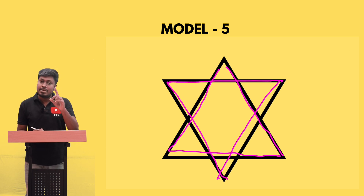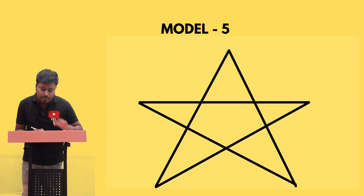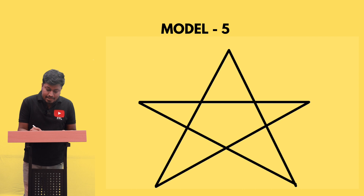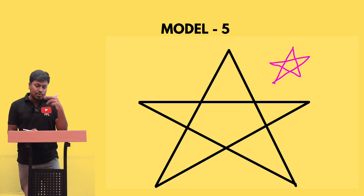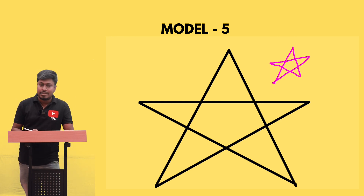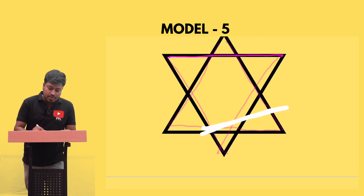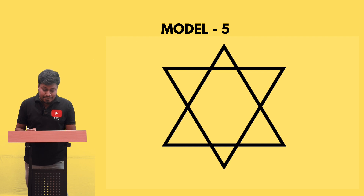So type one has two overlapping triangles. In type two, there are not two separate triangles — instead it is drawn like the star we used to draw as children in one continuous stroke. So totally there are only two types of stars, and based on the type we solve the question.